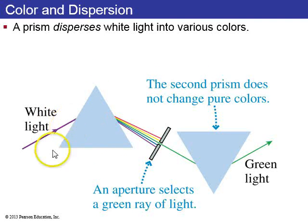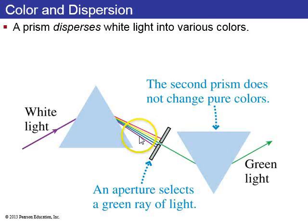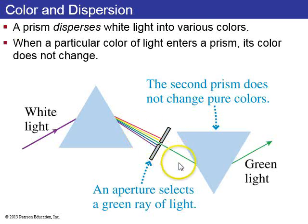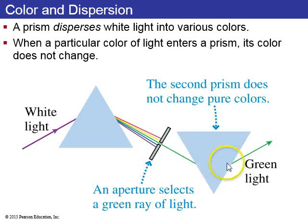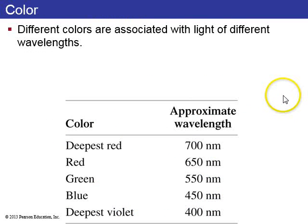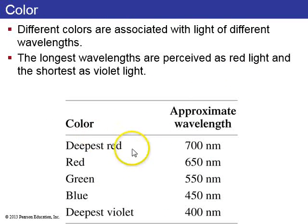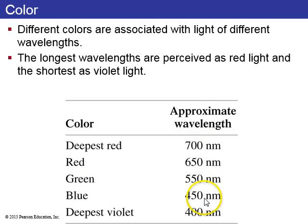A prism disperses white light into various colors. White light already contains all these colors; the prism just separates them into different directions. If you start with a particular color like green light, a second prism changes the direction but doesn't split the green light into component colors. All the different colors are associated with different wavelengths — longest wavelengths are red, shortest are violet, following Roy G Biv in decreasing wavelength. Combining all colors together gives white light.